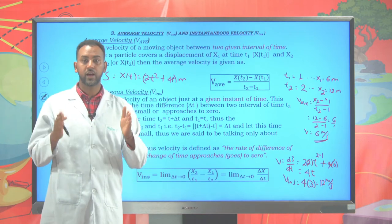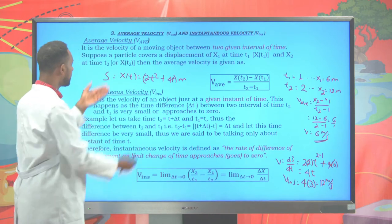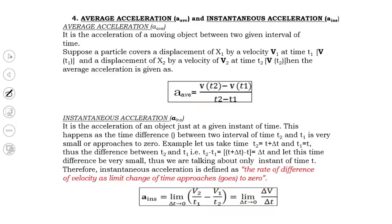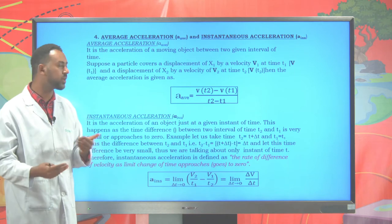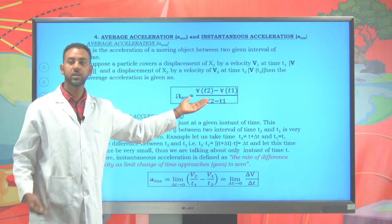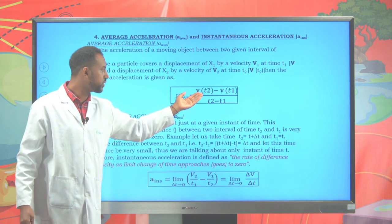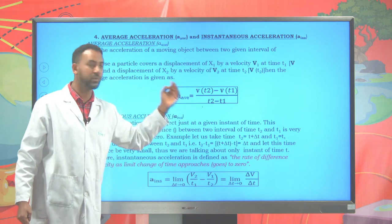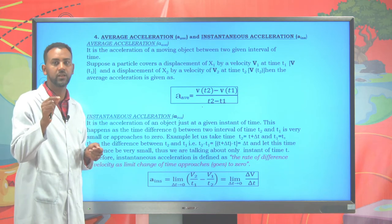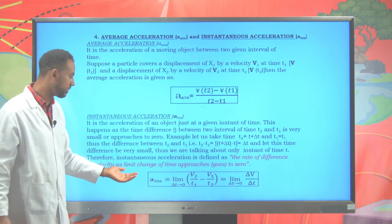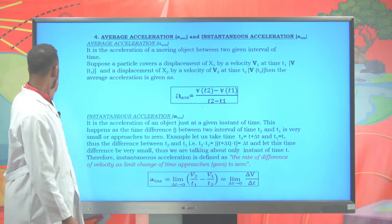When asked for average velocity, it is between two time intervals. The same principles apply to acceleration: average acceleration is (v₂ − v₁) / (t₂ − t₁), whereas instantaneous acceleration is found by taking the derivative of the velocity function with respect to time.